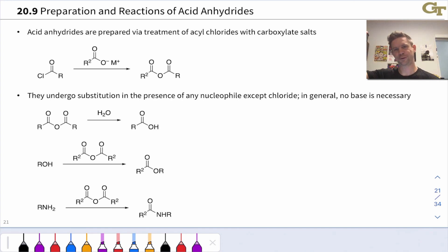Because they're further down the reactivity ladder, they're more stable toward nucleophiles than acyl chlorides. They can be made from acyl chlorides by treating an acyl chloride with a carboxylate salt or a carboxylic acid and base, and the result is an acid anhydride.